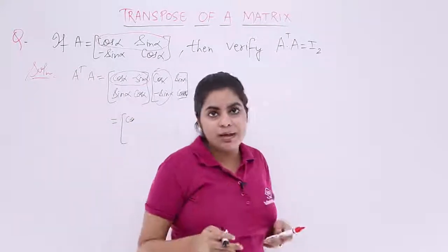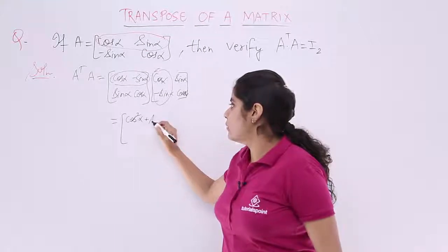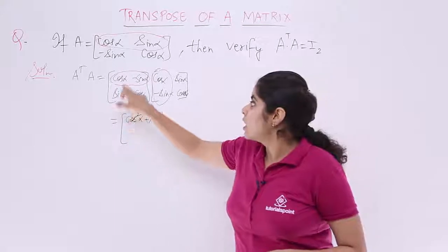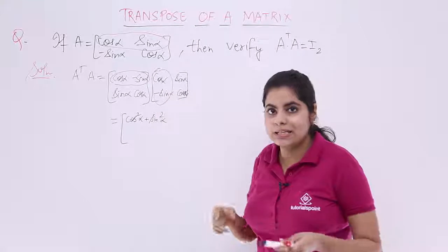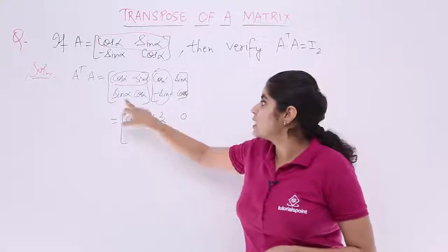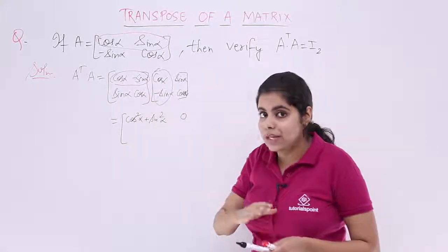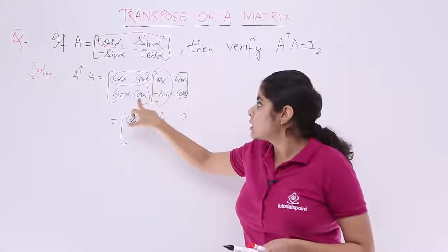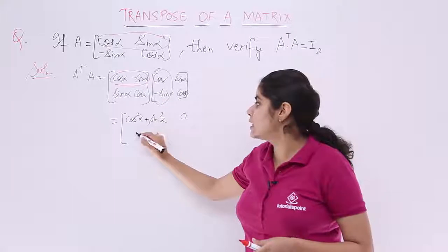So it is cos square alpha plus sin square alpha, then cos alpha sin alpha. Here it is minus sin alpha cos alpha. So basically these things cancel out. So it is zero. Next sin alpha cos alpha into cos alpha because now it is the turn of second row and first column. So sin alpha into cos alpha, one is plus one is minus. So basically it is again zero.